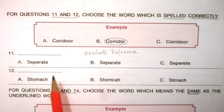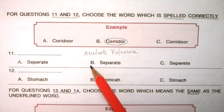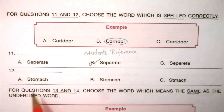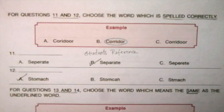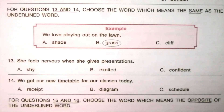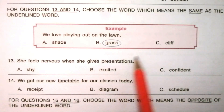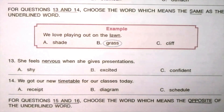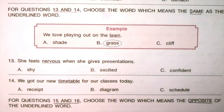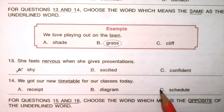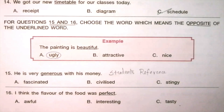Example: corridor. Question 11: Read the given options carefully. The answer is B: separate. Question 12: Read the given options carefully. The answer is A: stammer. For questions 13 and 14, choose the word which means the same as the underlined word. Example: We love playing out on the lawn. Options: shade, grass, cliff. The answer is grass. Question 13: She feels nervous when she gives presentations. Options: shy, excited, confident. The answer is A: shy. Question 14: We got our new timetable for our classes today. Options: recipe, diagram, schedule. The answer is C: schedule.